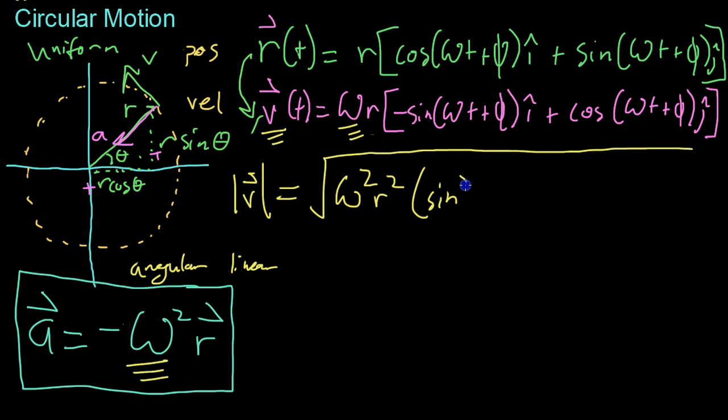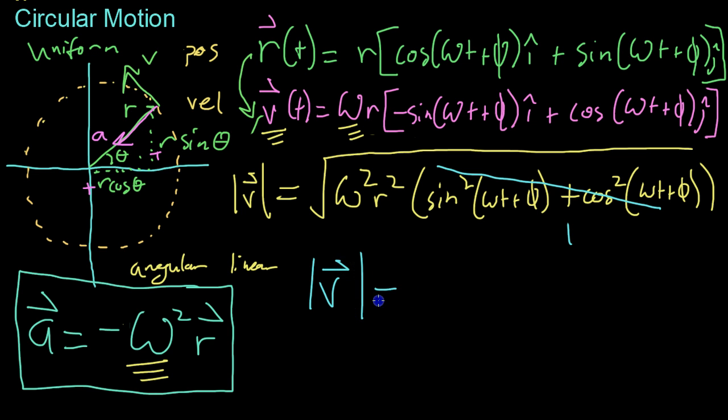Plus cosine squared omega t plus phi. And once again, these have the same argument. And because of a trig property, these all become one, which means that the speed at any given point of v in terms of omega is v equals omega r.